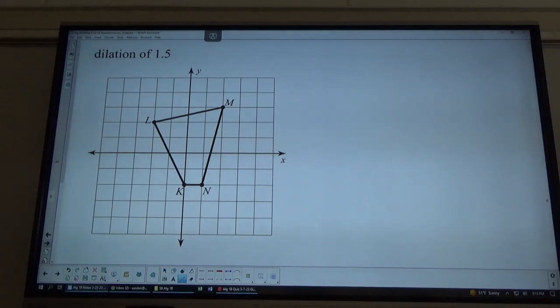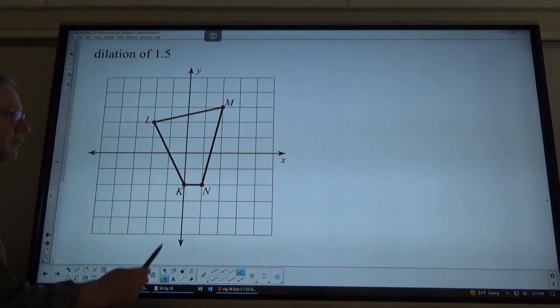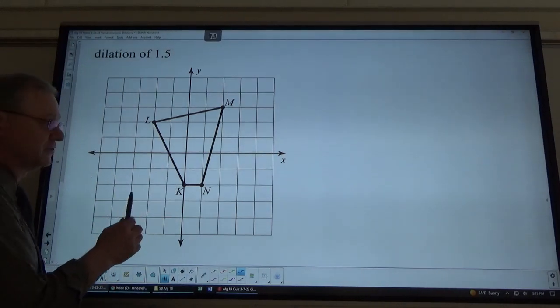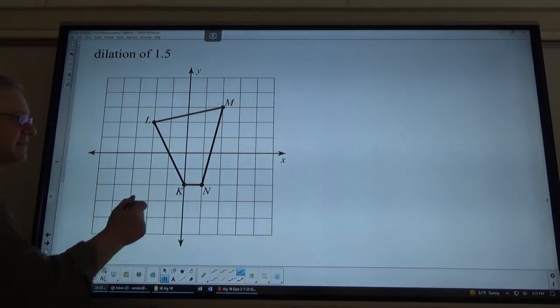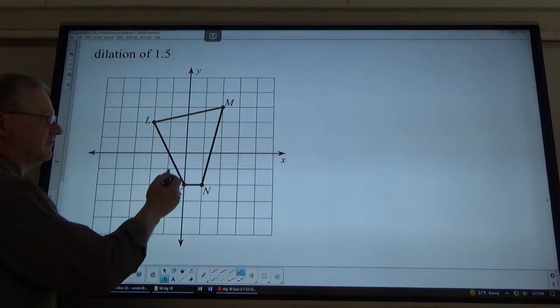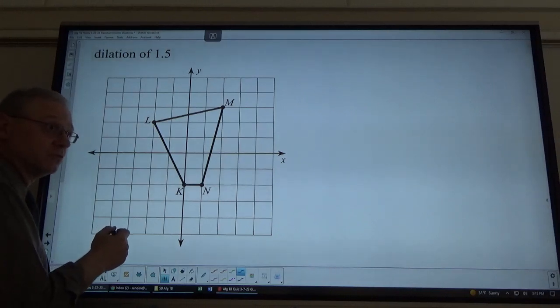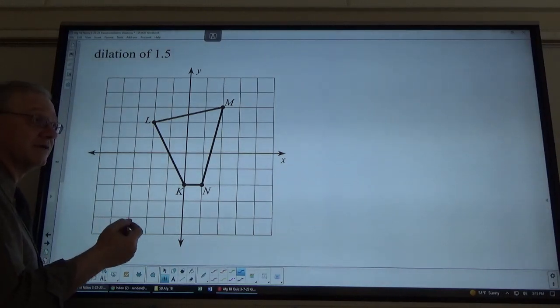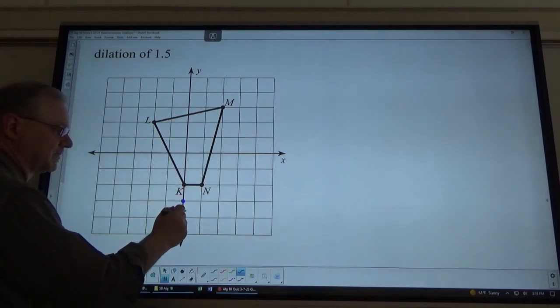Here's the next one. A dilation of 1½. So, we need to pick a point. Now, remember, it's always from the origin in these situations. You can have a dilation from another point, and you would draw out those lines to help you, maybe, or count from that point. In this case, I'll do K first. K is straight down 2. 1½ times 2 would be 3. So, 1½ of 2 is 3. There's K'.